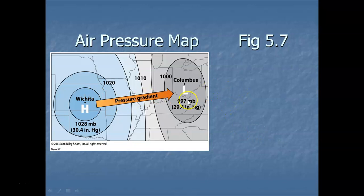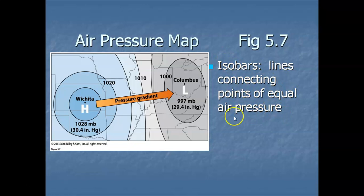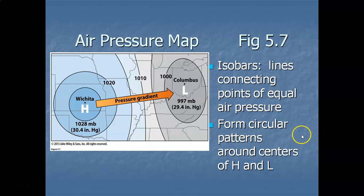Not only does air pressure vary with altitude, it also varies over the Earth's surface. Here we have an air pressure map, or weather map, showing centers of high pressure and low pressure. Lines drawn on the map are called isobars. The root word 'iso' is Latin for equal, and 'bars' refers to millibars of air pressure. Isobars are lines drawn on a weather map connecting points of equal air pressure.